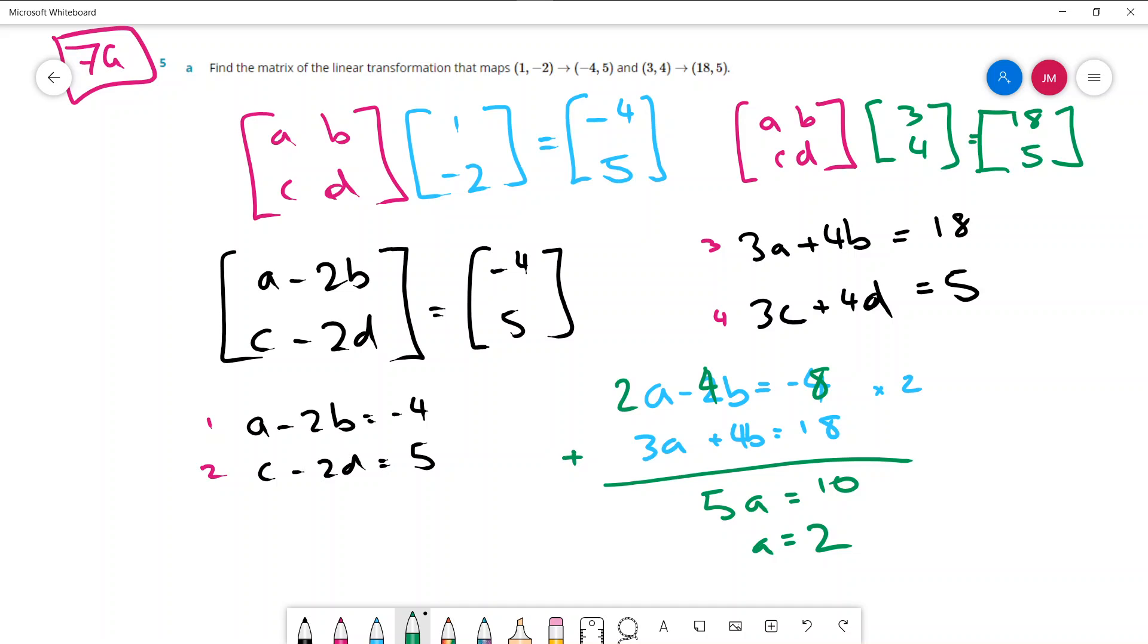Thank goodness it is a nice even number. So now I can sub that in to find B. So let's sub it into equation 1. I'd get 2 minus 2B equals negative 4. So it's minus the 2 over. I get minus 6 minus 2B. So B would equal 3. So there's A and B.